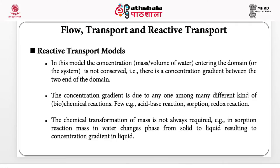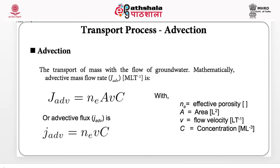To start with, we will use advection. Advection is the flow of mass along with the groundwater — that is, the velocity of the water forces the mass to flow. We quantify it mathematically with a mass flow rate called J_ADV, which equals Ne·A·V·C. Here, A is area, V is velocity, which equals discharge Q. So it can also be written as Ne·Q·C. If you are interested in flux, we divide the mass flow rate by the area, giving Ne·V·C. That is advection — the simplest form of transport.